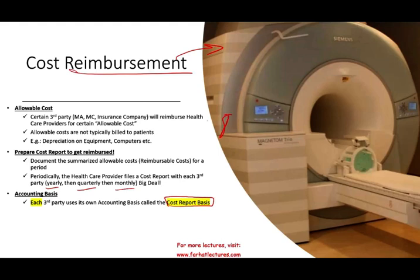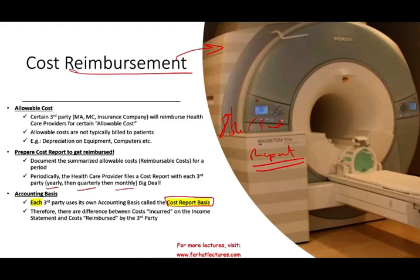If you have eight different providers — eight different parties reimbursing you — you have to prepare eight different reports, because each one of them would require you to prepare the report based on their cost report basis. Cost report basis means the basis that they use, and you have to comply with it. Think about the cash basis, the accrual basis, the modified accrual — cost report basis is a basis designed or administered by that insurance company, like Blue Cross Blue Shield. Therefore, there are differences between cost incurred on the income statement and cost reimbursed by the third party.